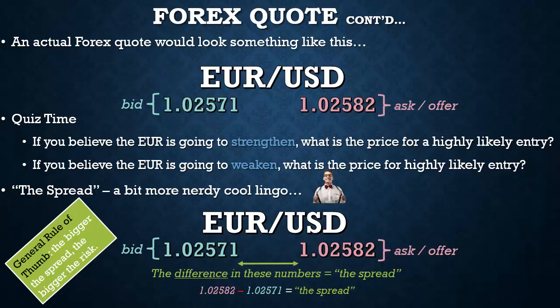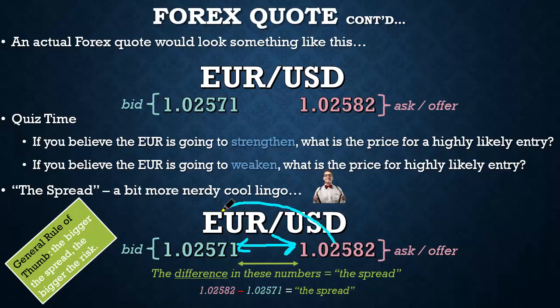You went through the full sequence: Euro weakens → exchange rate goes down → short → sell first → need buyers → buyers are at the bid → bid value is 1.02571. Feel free to rewind and go through that sequence again. Now let's move on to the next bit of lingo: the spread. The spread is simply the difference between the bid and the ask — just subtract one from the other and that equals the spread.